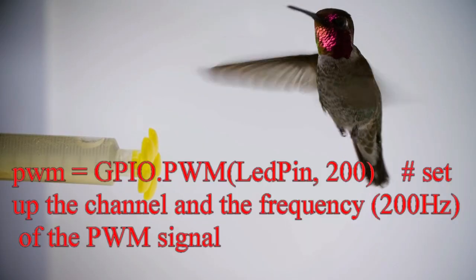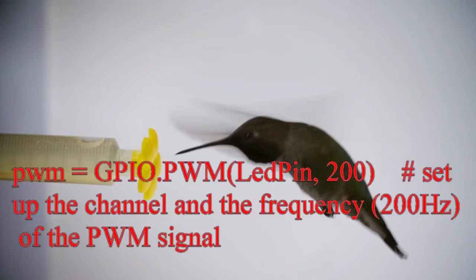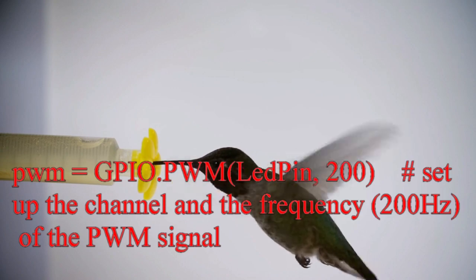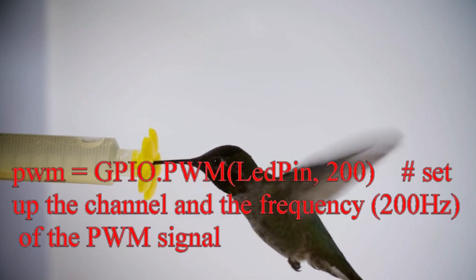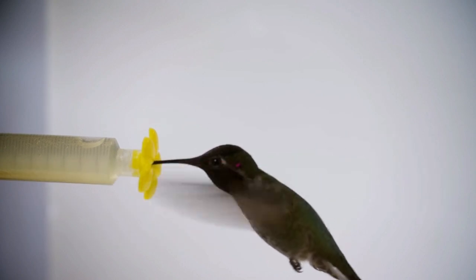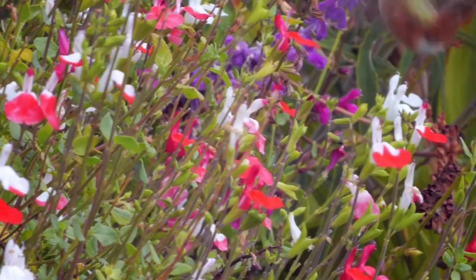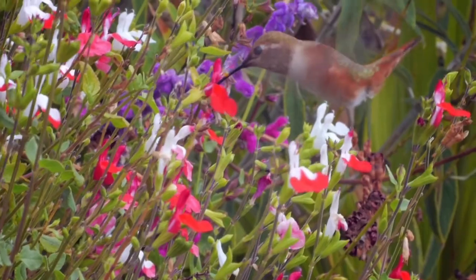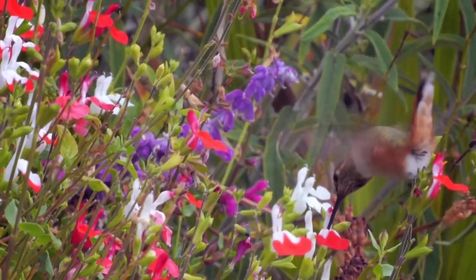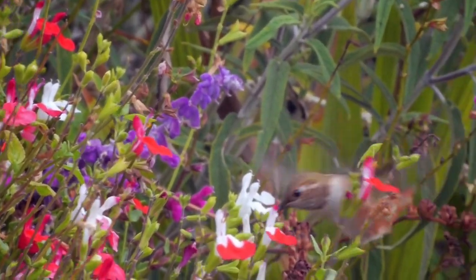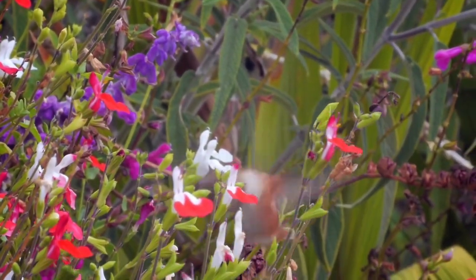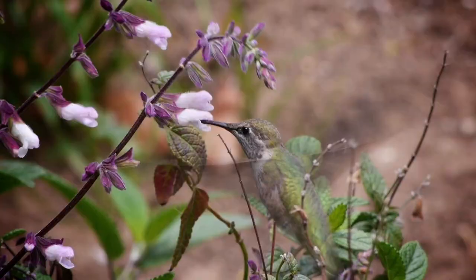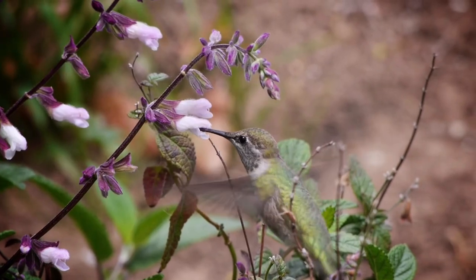A 200 Hz frequency, which is what I used in my program, means that it will repeat a complete duty cycle 200 times per second. Because the human eye cannot capture a frequency much above 50, the LED will be seen as glowing at the output level simulated by the duty cycle.